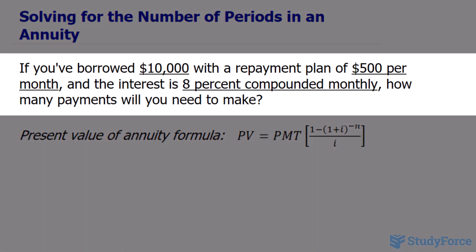If you've borrowed $10,000 with a repayment plan of $500 per month, and the interest is 8% compounded monthly, how many payments will you need to make to repay your loan?